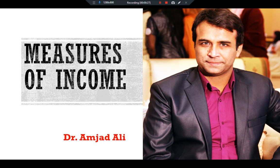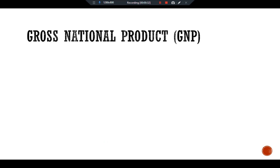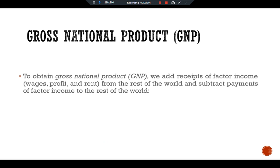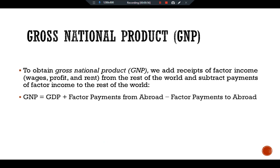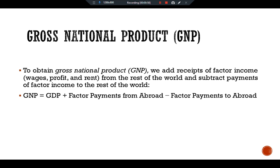To see how the alternative measures of income relate to one another, we start with GDP and add or subtract various quantities. First, we are discussing Gross National Product, GNP. To obtain GNP, we add receipts of factor income — wages, profit, and rent — from the rest of the world, and subtract payments of factor income to the rest of the world. The formula is: GNP = GDP + factor payments from abroad − factor payments to abroad.